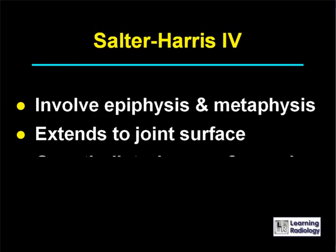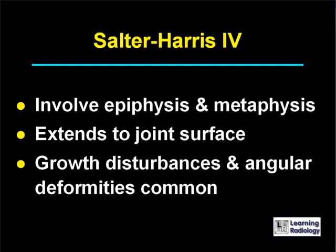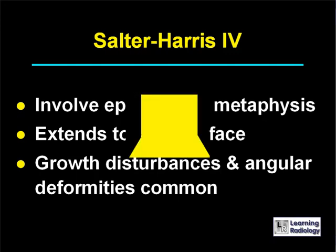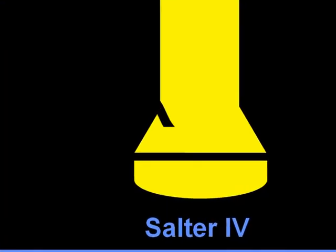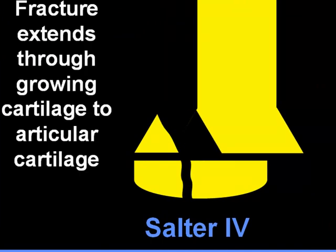Salter-Harris 4 fractures involve the epiphyseal plate, the epiphysis, and the metaphysis. Because they involve the epiphysis, they do extend to the joint surface. Salter-Harris 4 fractures will oftentimes result in growth disturbances or angular deformities. The fracture extends through the epiphysis to the articular cartilage.